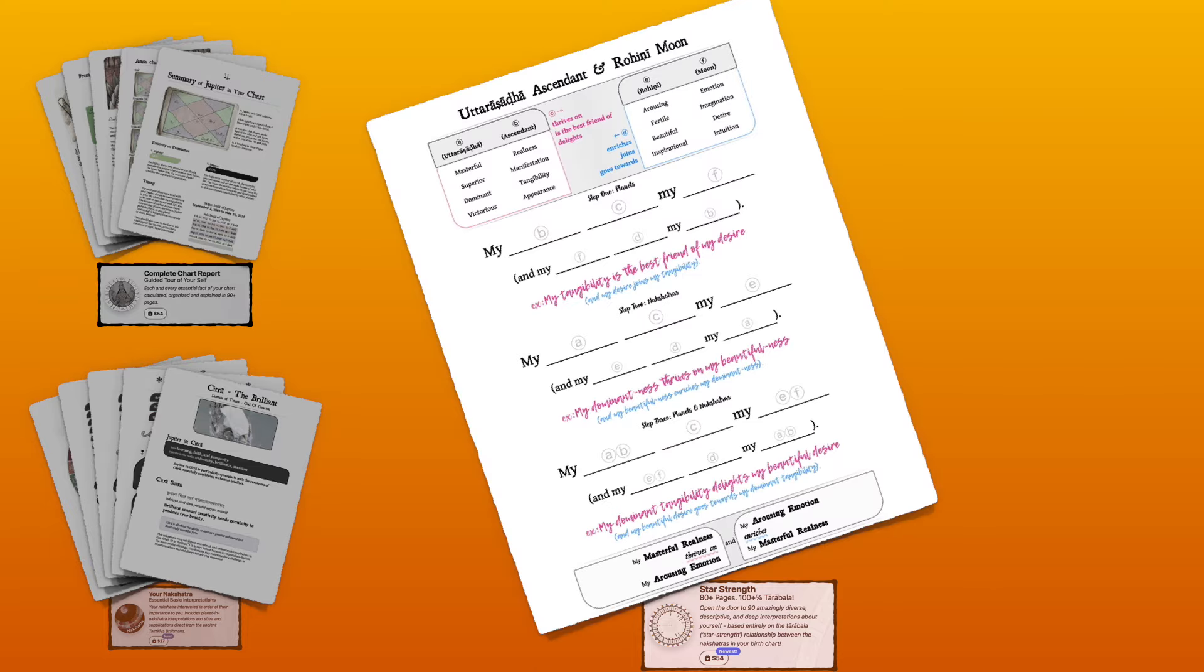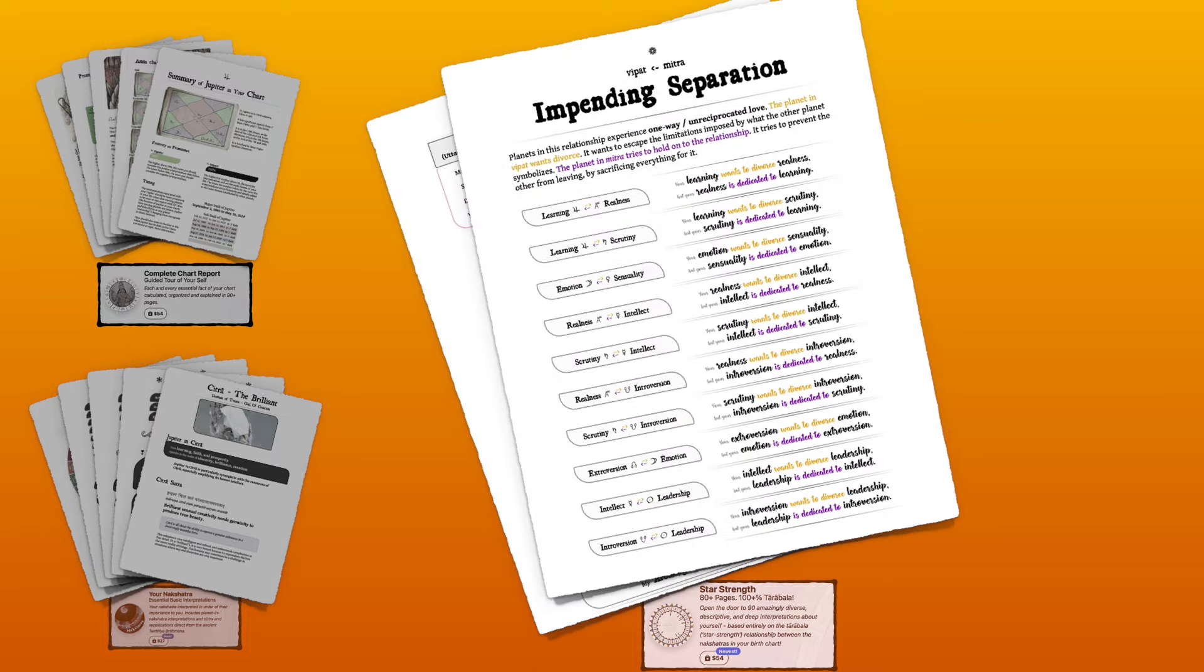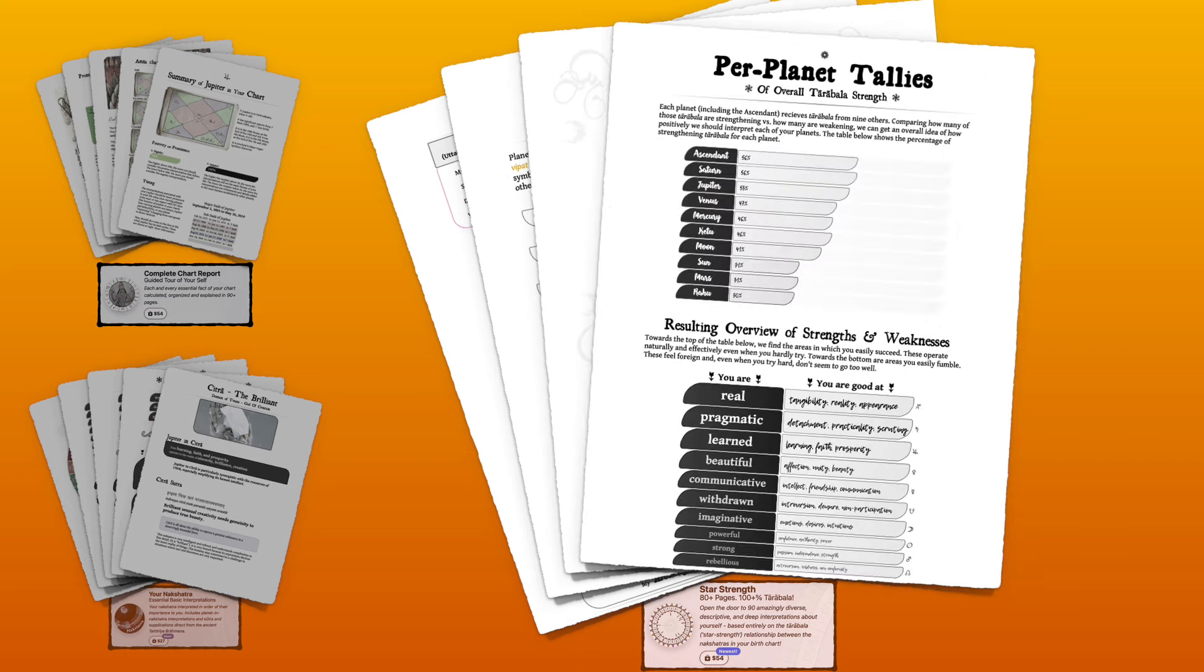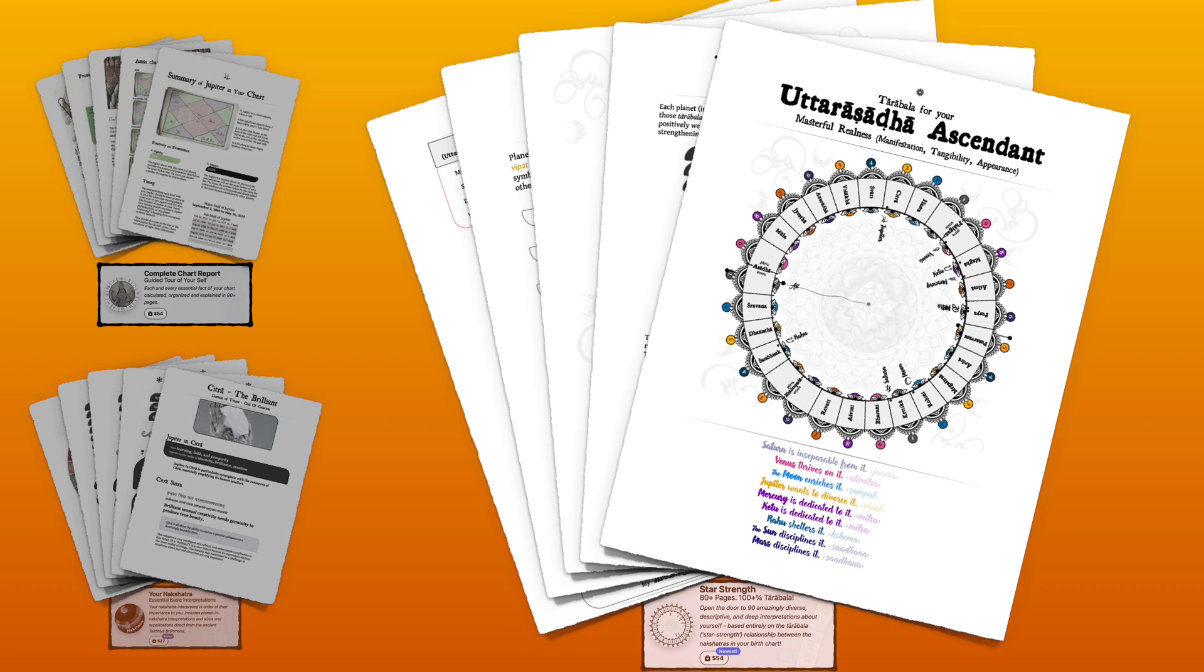The newest report, Star Strength, uses a system called Taraabala to unfold 90 interpretations of the nuanced relationships between all the planets in your chart, which paints a rich and detailed picture of how your various strengths cooperate or compete with each other. Order these or any of my reports and accelerate your journey to deeper self-understanding.